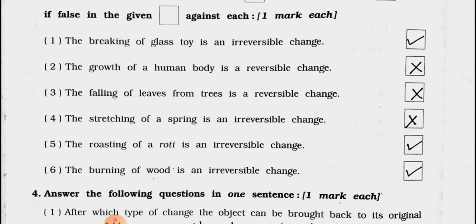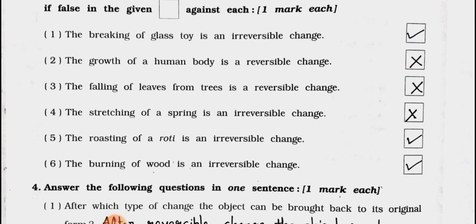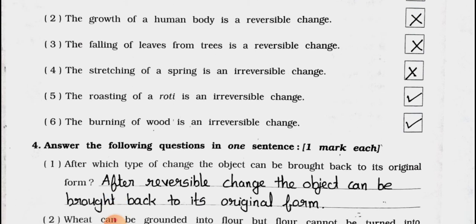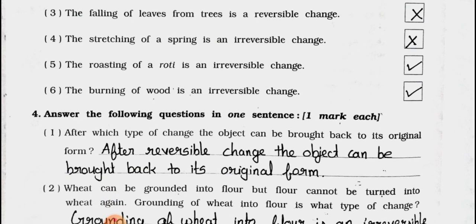Number 3: The falling of leaves from trees is a reversible change — false. Number 4: The stretching of a spring is an irreversible change — false. Number 5: The roasting of a roti is an irreversible change — true. Number 6: The burning of wood is an irreversible change — true.